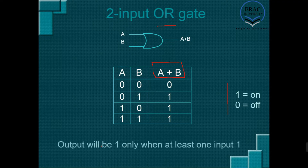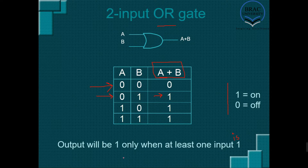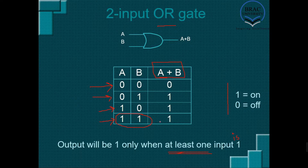The rule for the OR gate: output will be 1 only when at least one input is 1. At the first row both inputs are 0, so output is 0. At the second row one input is 0 and the other is 1 — since at least one input is 1, the output is 1. At the third row A is 1 and B is 0, so the output is 1 again. At the final row both A and B are 1, which satisfies the rule of at least one input being 1, so the output is 1. This is the symbol for a two-input OR gate.